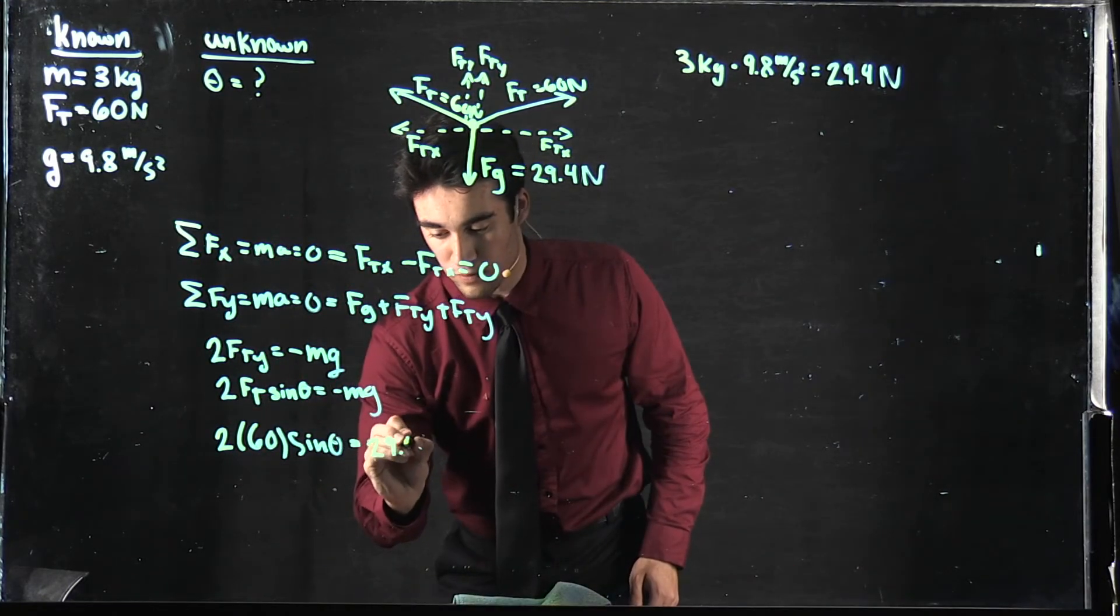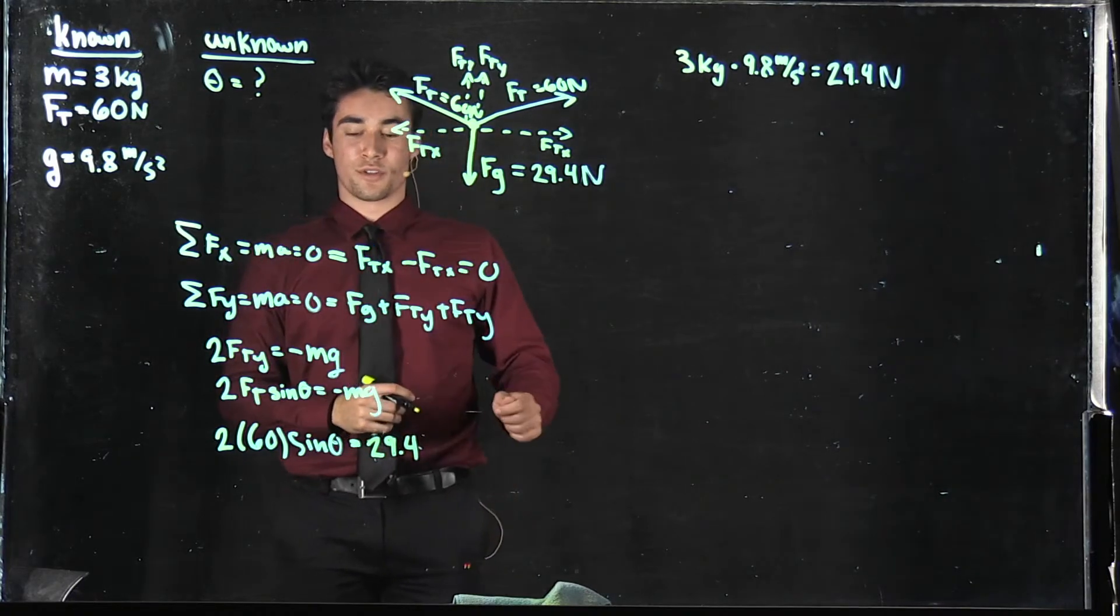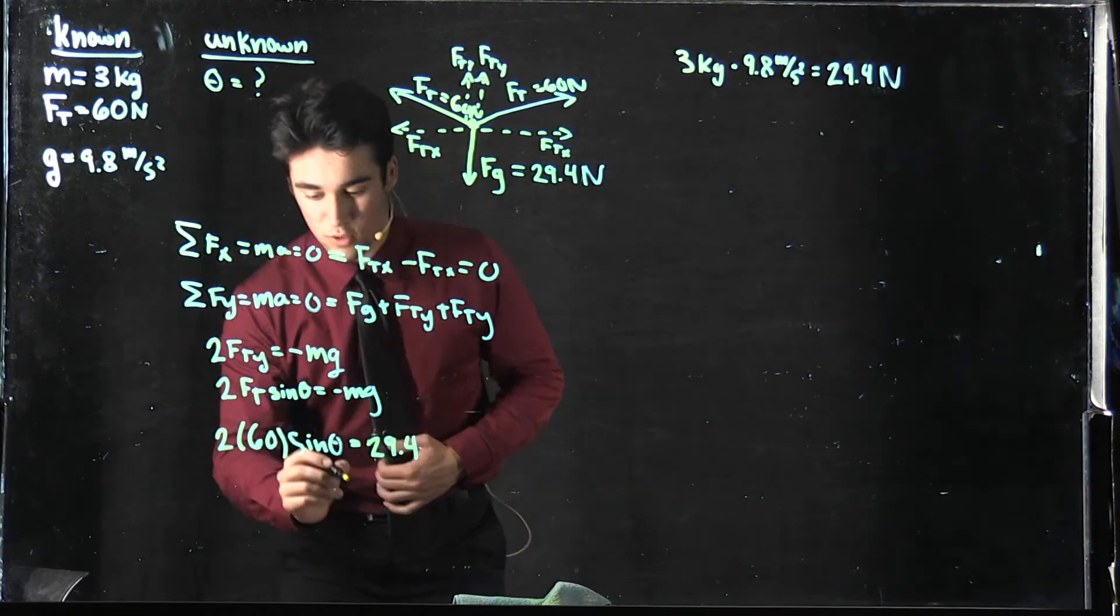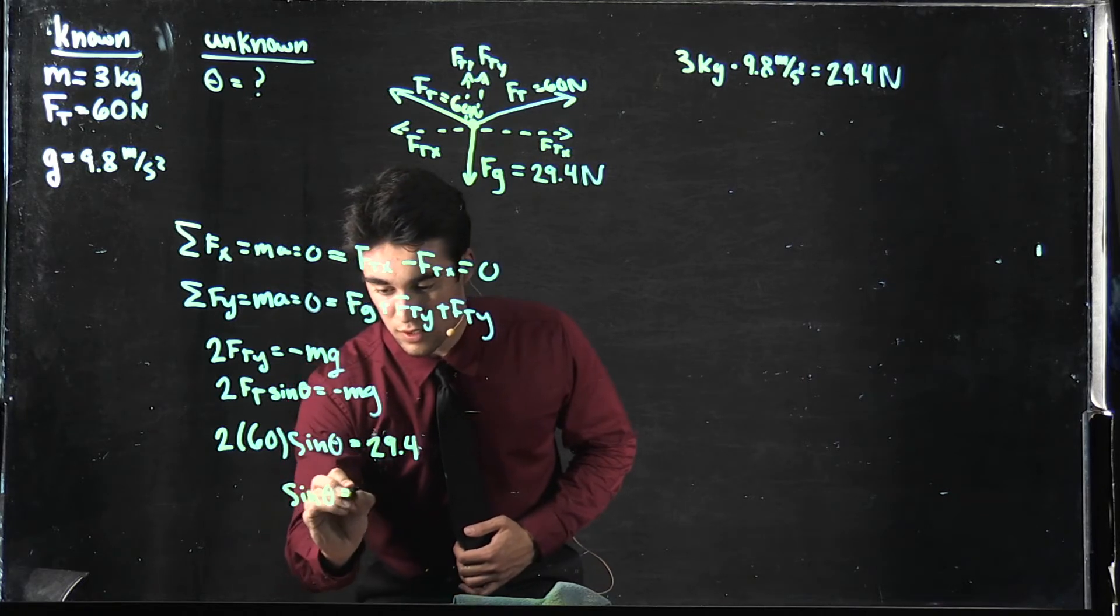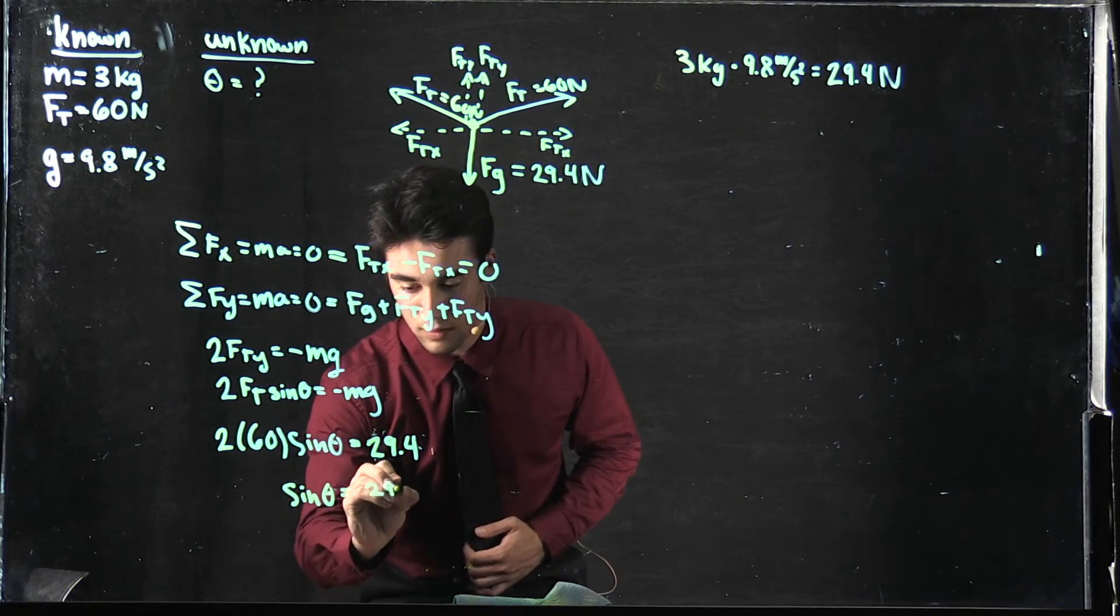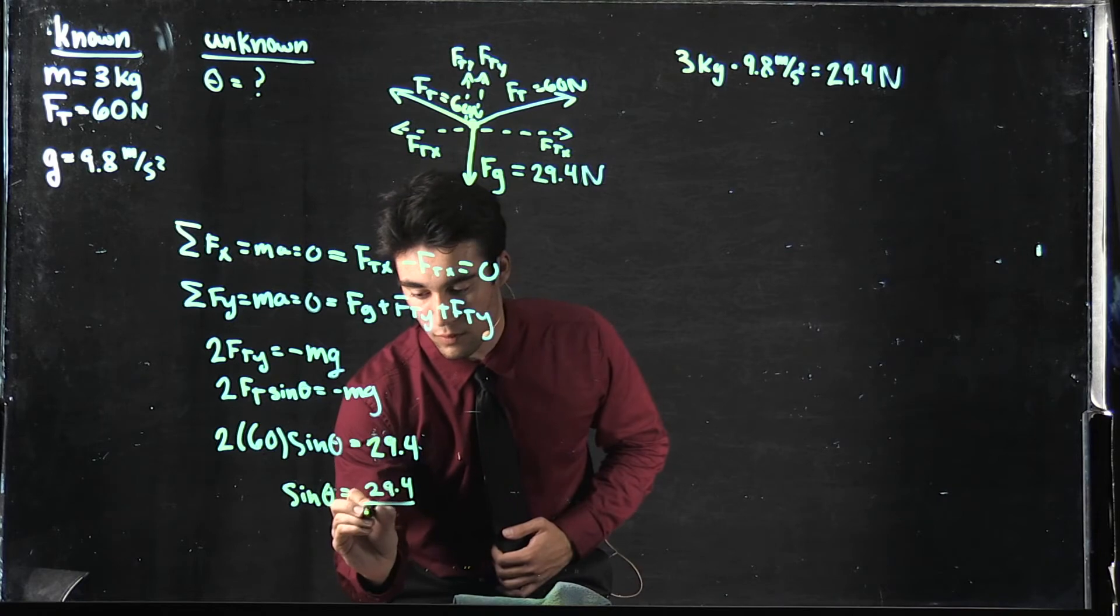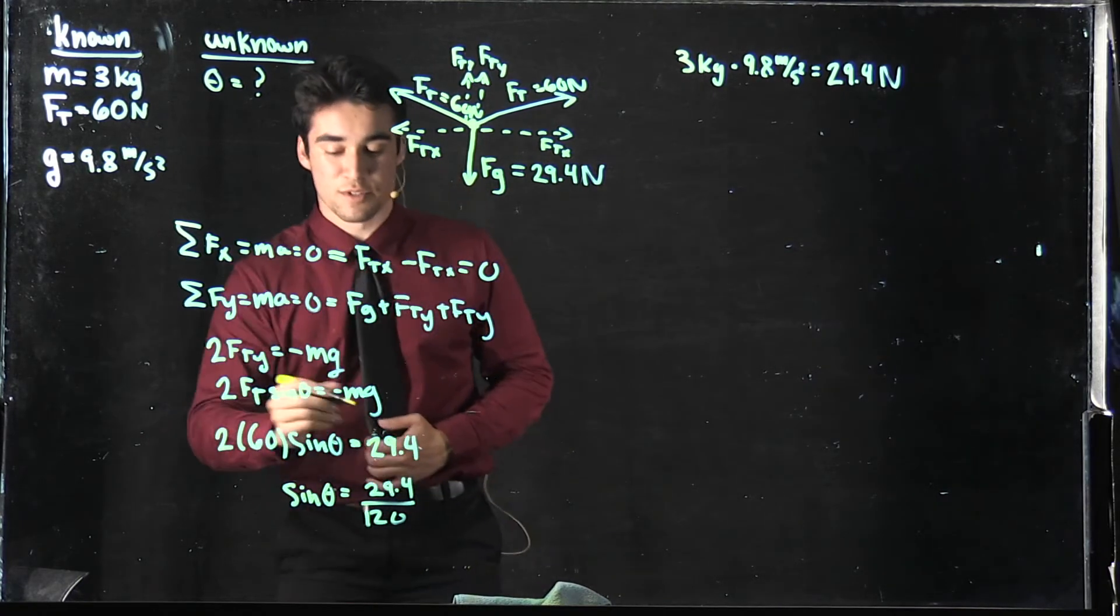In order to do this, we have to divide through. Sin theta equals 29.4 over 120, which is just 60 times 2.